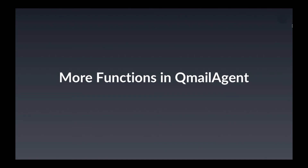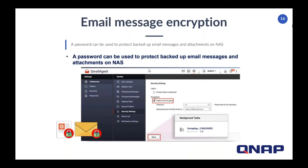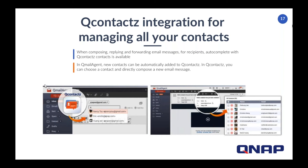Let's look at some additional functionality of QMail Agent. For added security, you can set up encryption to protect your backed-up emails. This way, the information in your emails will be inaccessible without the password, keeping your privacy intact. We also integrate our app Q-Contacts with QMail Agent so that you can easily add your contacts to QMail Agent. Q-Contacts supports auto-complete when inputting an email address, so you might type in a few letters and it will auto-complete the email address you're looking for. Additionally, new contacts in QMail Agent can be automatically added to Q-Contacts.